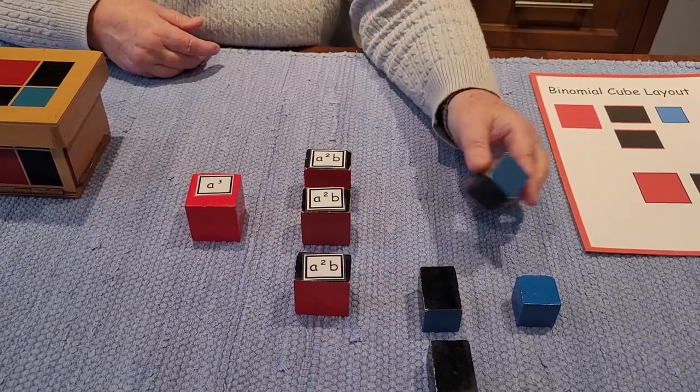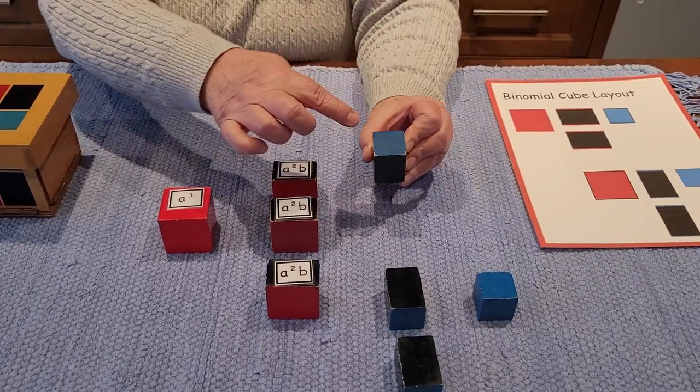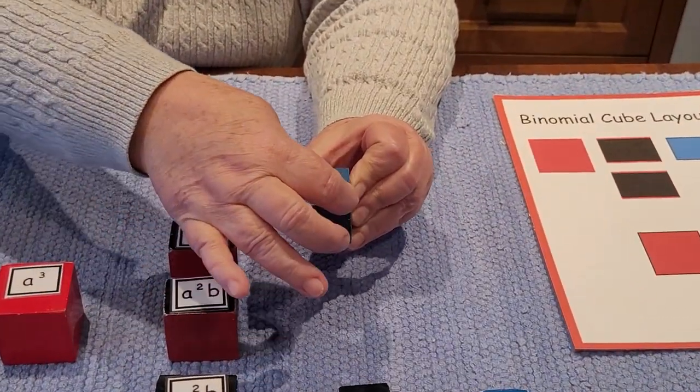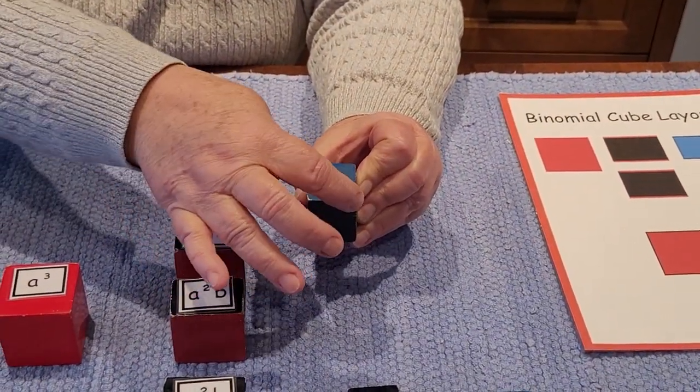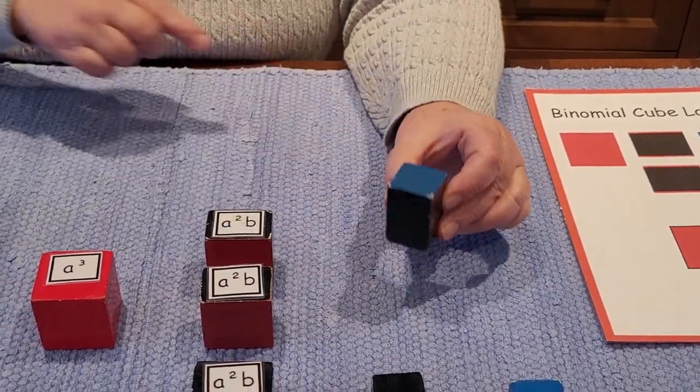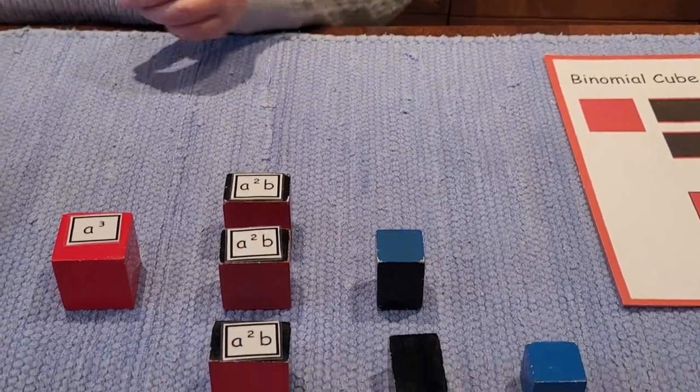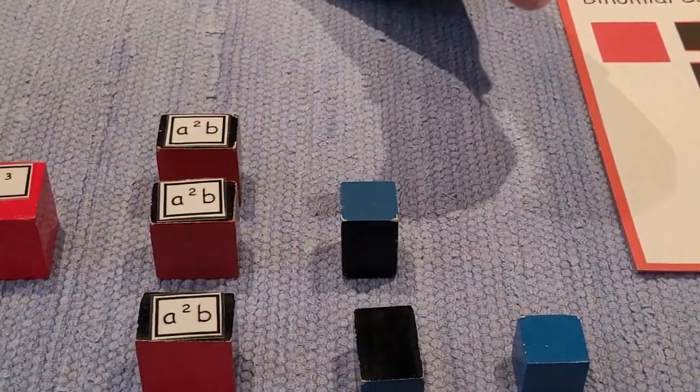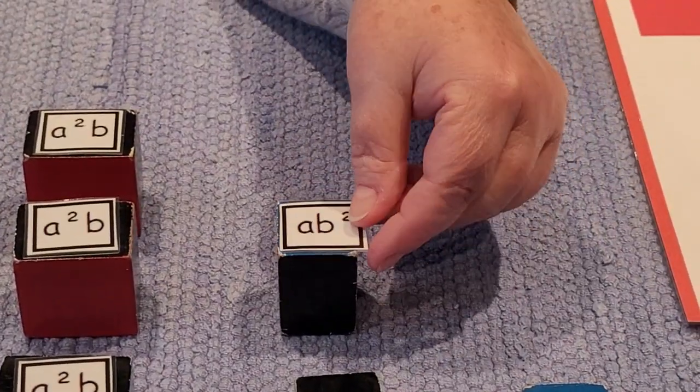This piece is the same dimension here and here, so we're going to call this B, this dimension. This is B squared A. We don't say B squared A, we say AB squared.